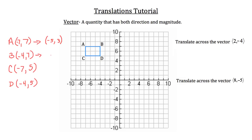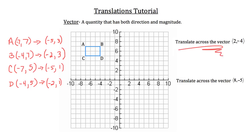We're going to do the same math for B. The x coordinate of B is -4, and adding 2 gives -2. The y coordinate is 7, and 7 plus negative 4 is 3. So the new coordinate for B is (-2, 3). For C: -7 plus 2 is -5, and 5 minus 4 is 1. And for D: -4 plus 2 is -2, and 5 plus negative 4 is 1. So these are the new coordinates for A, B, C, and D after being translated across the vector (2, -4).